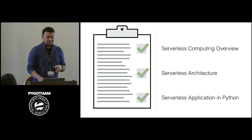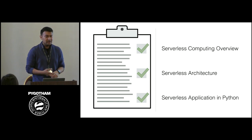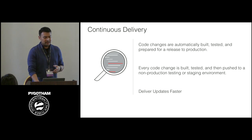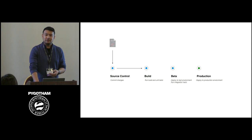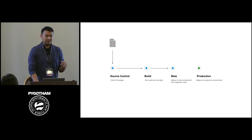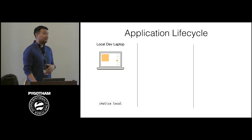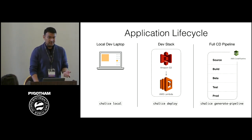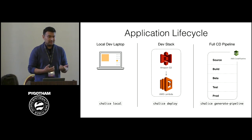We covered the three topics: what serverless computing is, common architectural patterns, and how to write these applications in Python. One important next step is continuous delivery — once your application is running, how do you automatically build, package, and deploy whenever you push to source control, deploy to a test or beta stage, run integration tests, and then deploy to production. Chalice has a feature to generate a pipeline for you using AWS CodePipeline, CodeBuild, and CloudFormation with SAM templates to automatically handle deployment.